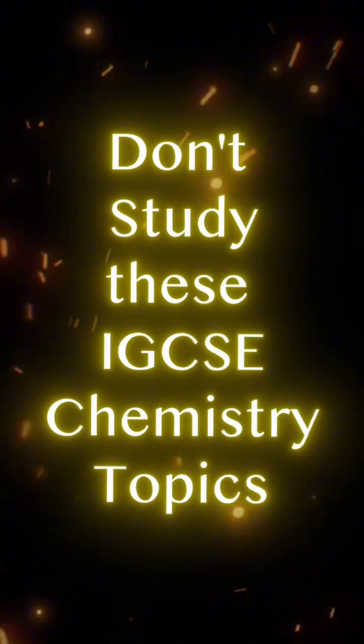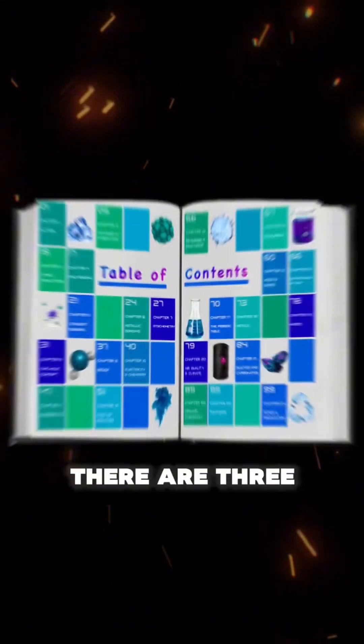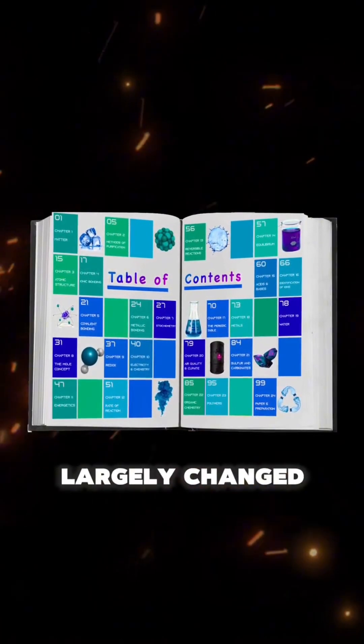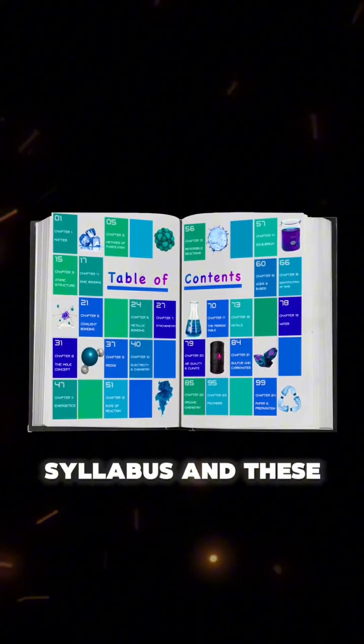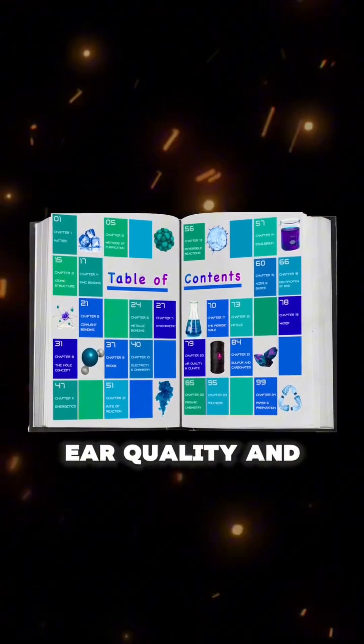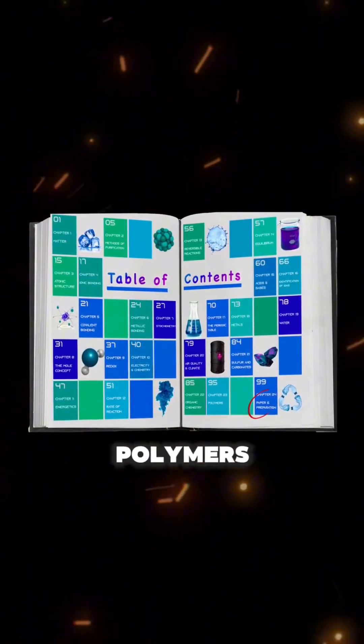What are those topics that you should exclude while preparing for your Cambridge IGCSE chemistry exam? There are three topics that have largely changed since the last syllabus and these are metals, air quality and climates in addition to polymers.